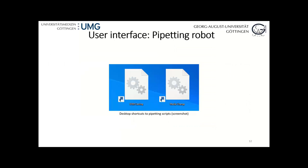For the pipetting robot we don't have a sophisticated user interface yet — it's just a touch screen with two desktop icons. You put your plate there, prepare the liquids, then double-tap either the EHM casting or the media change program and it will run. We want to improve that in the future, but currently it's working and self-explanatory, so it's quite easy to use even though it's not very beautiful.